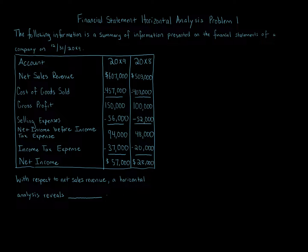Selling expenses in 20x9 are $56,000 and in 20x8 are $52,000. Net income before income tax expense in 20x9 is $94,000 and in 20x8 is $48,000. Income tax expense in 20x9 is $37,000 and in 20x8 is $20,000. Net income in 20x9 is $57,000 and in 20x8 is $28,000.